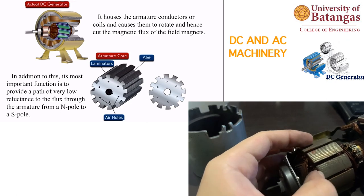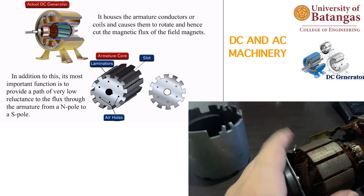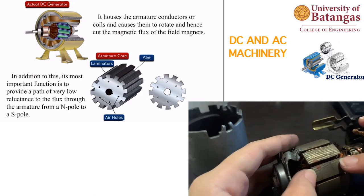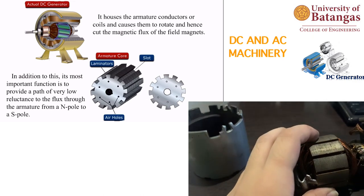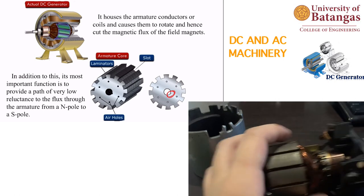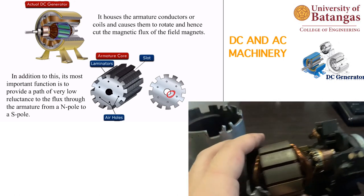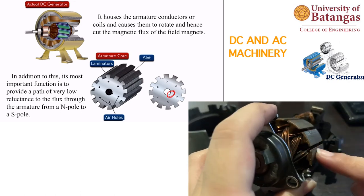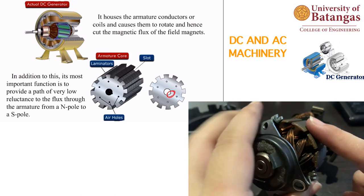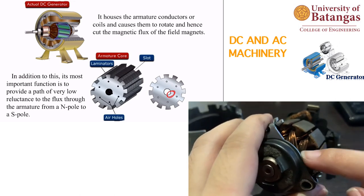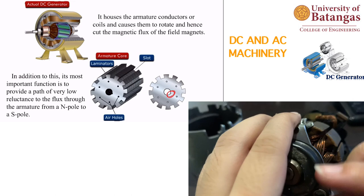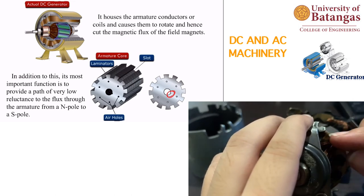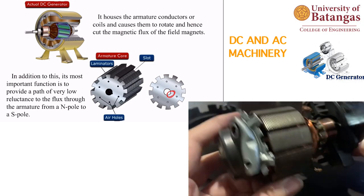The armature is usually cylindrical or drum-shaped, made from laminated circular sheet steel discs (0.5 mm thick) pressed together hydraulically. It is keyed to the shaft using a keyslot. The slots in the laminations can be cut or punched. The armature conductors are housed in these slots.